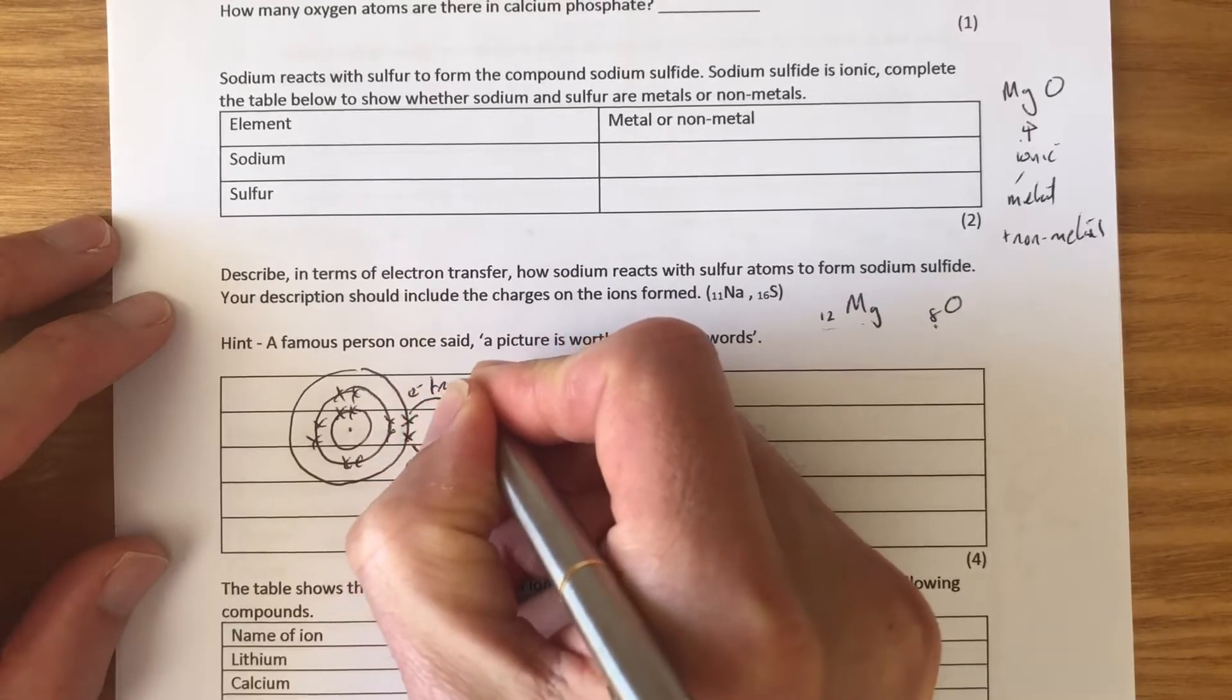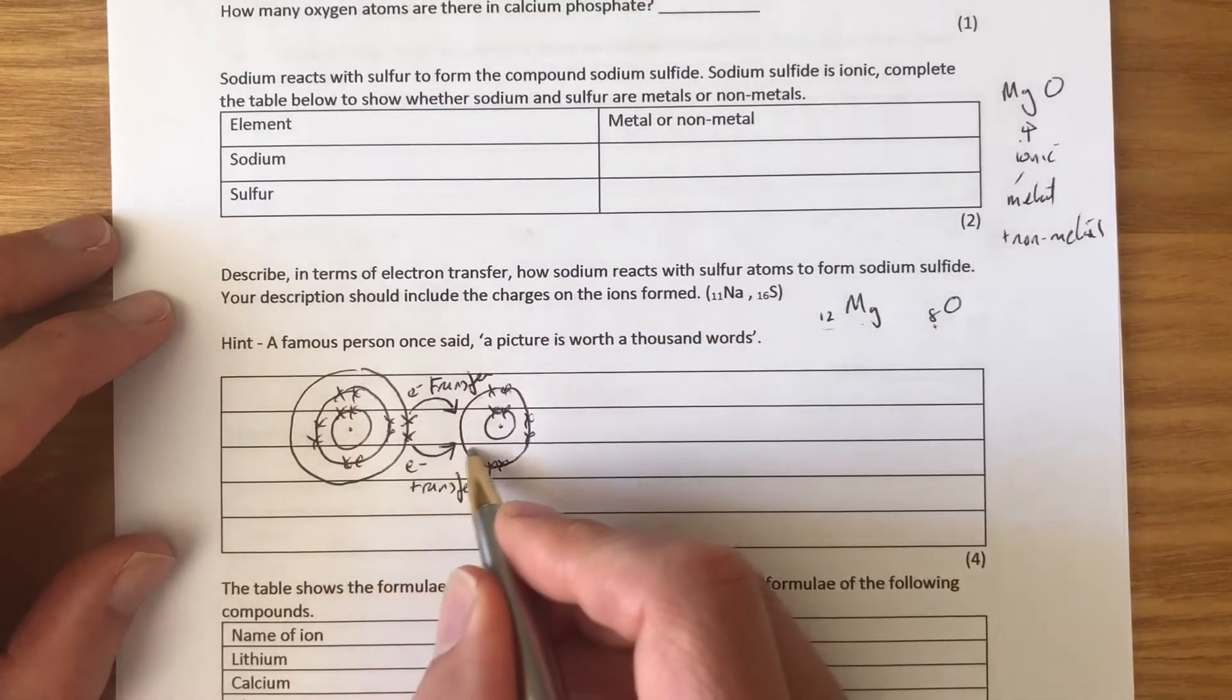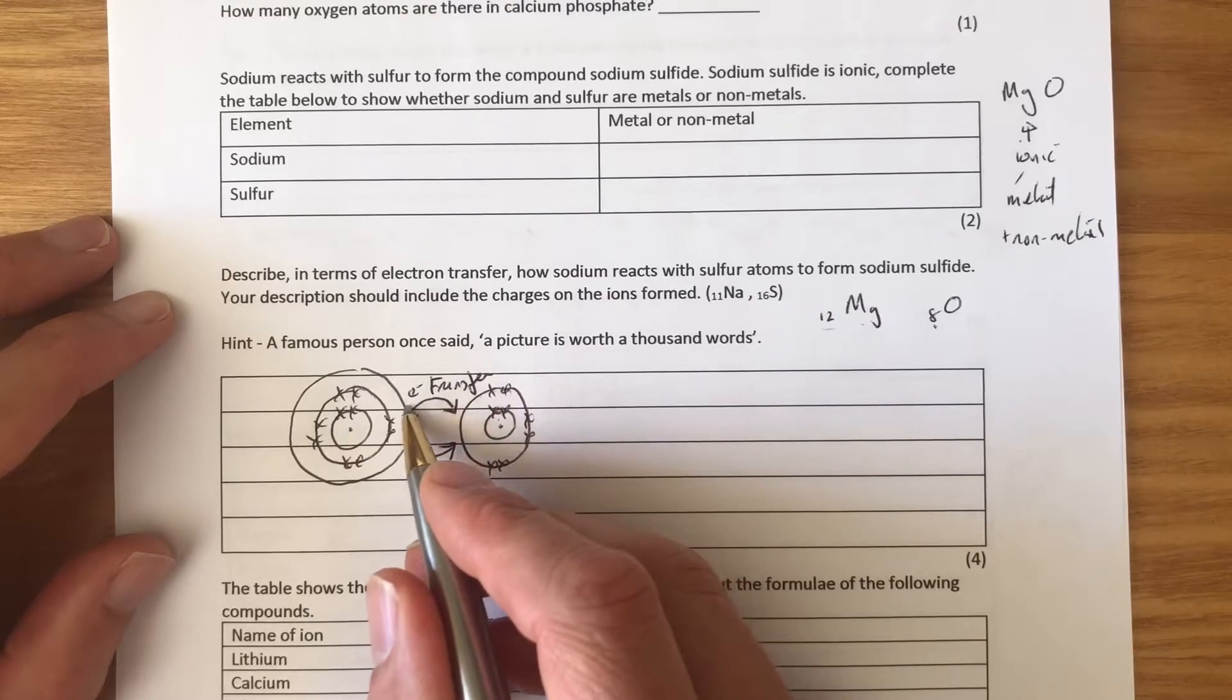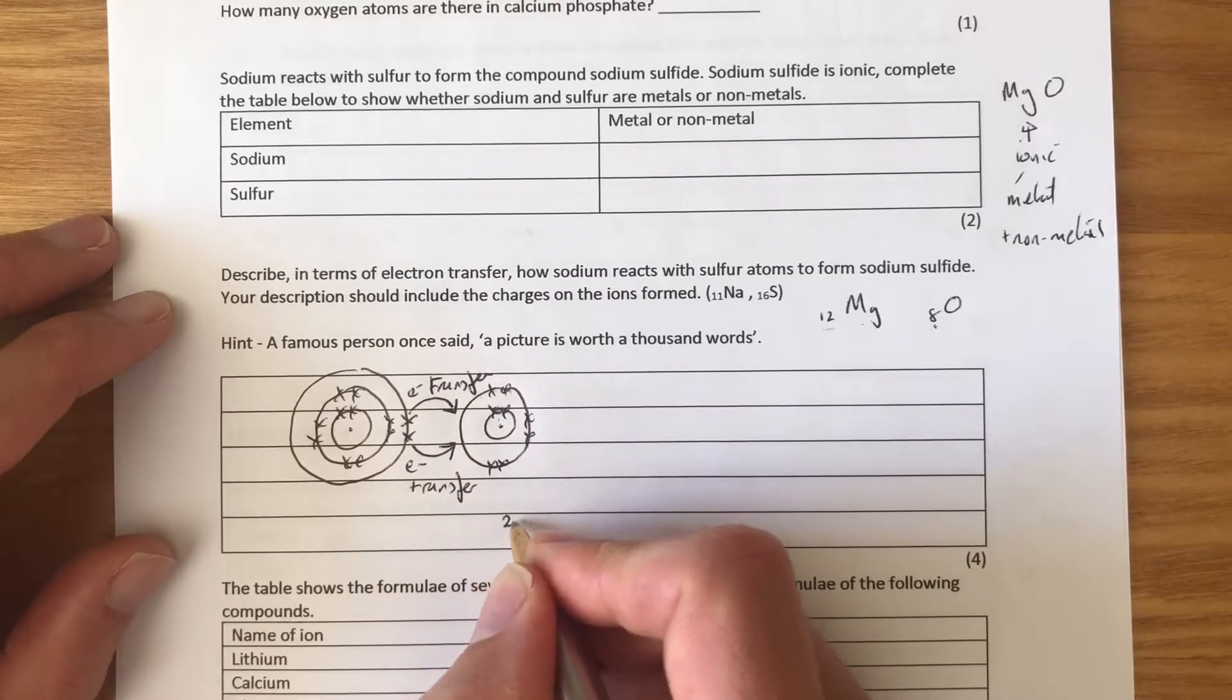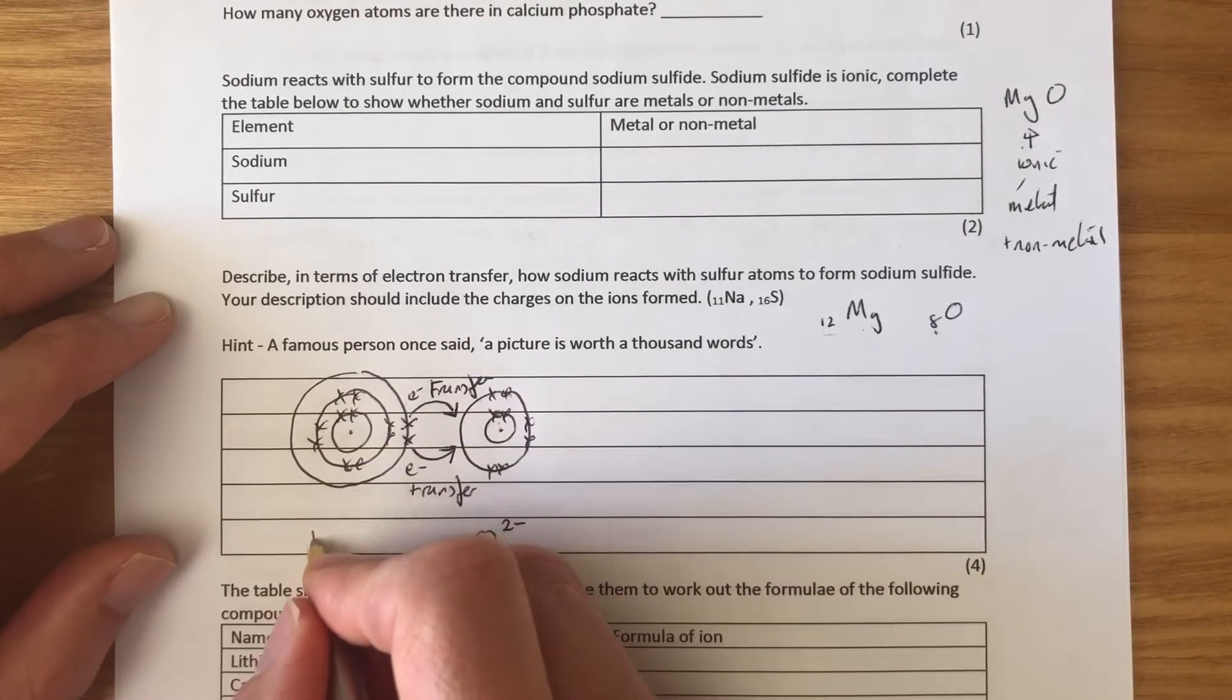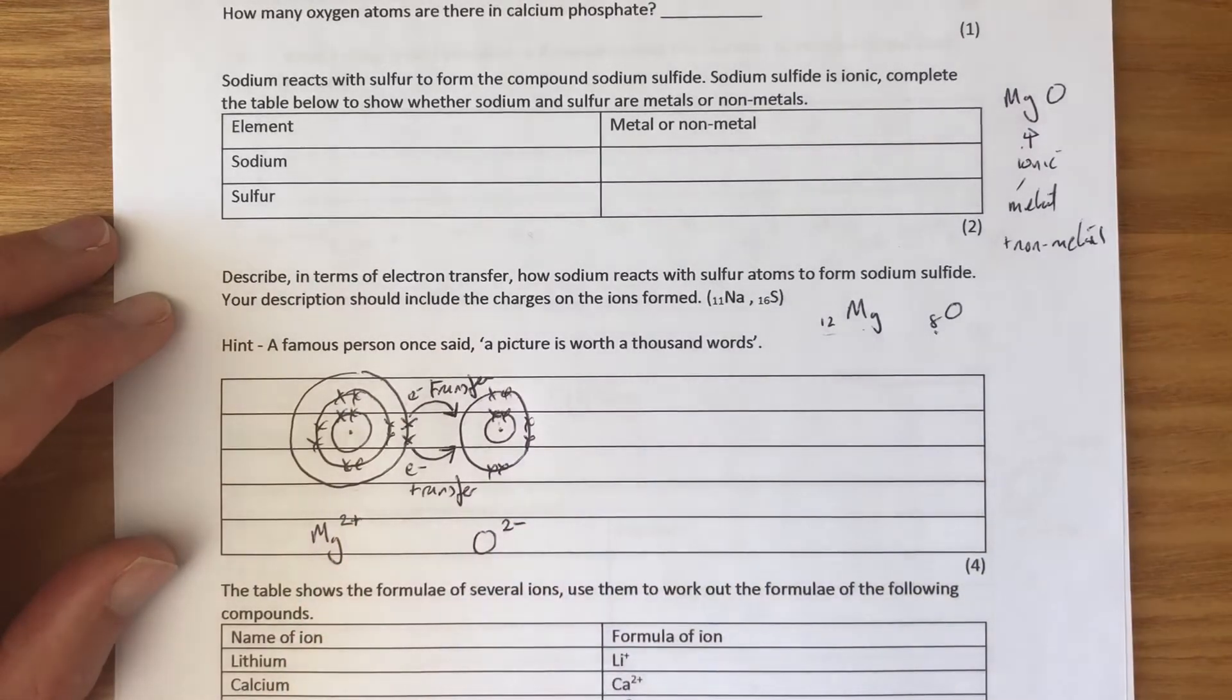And we're also going to label this arrow here, electron transfer. Now, hopefully, with these arrows, we can see the negative charge is going towards this atom here. One negative charge, two negative charge. So, we can label this one, therefore, two-minus. And that's going to be the O2- ion that's formed. If this one's going to be negative, this one has to be positive, and it's lost two electrons. This is going to be Mg2+.